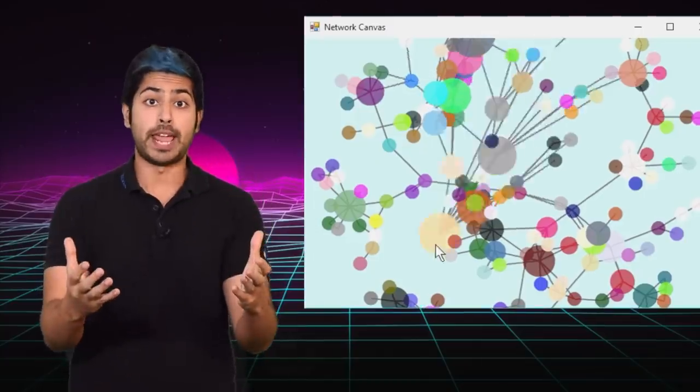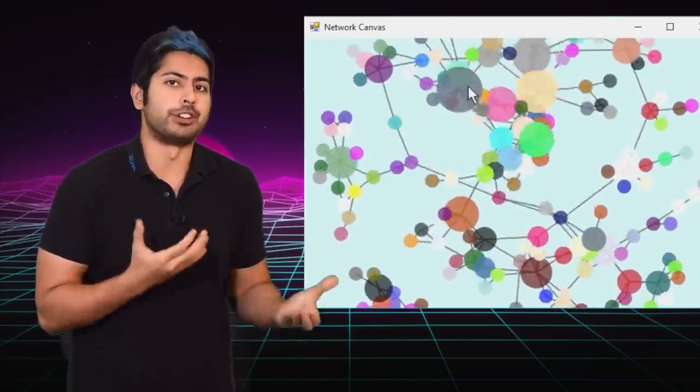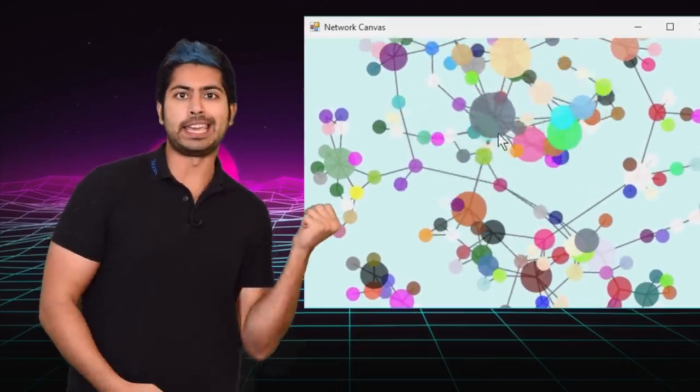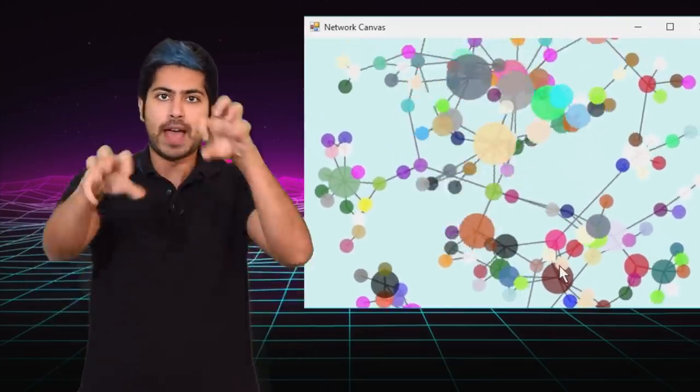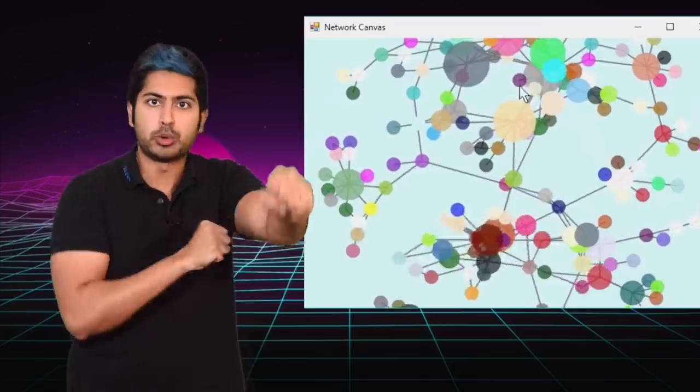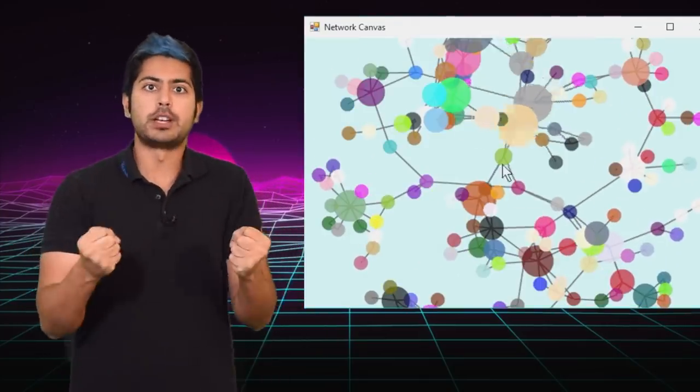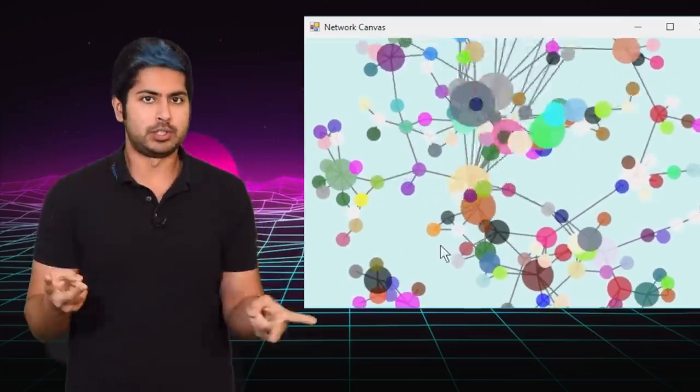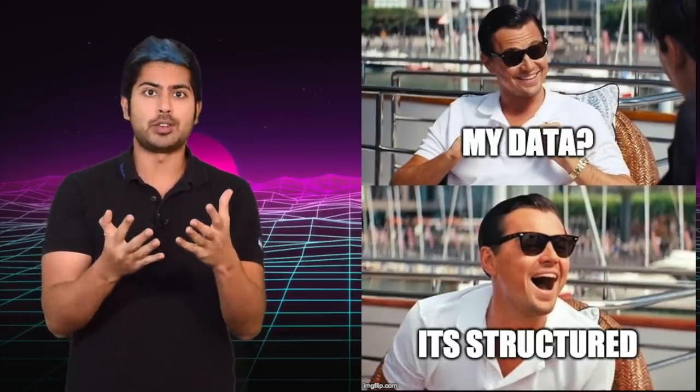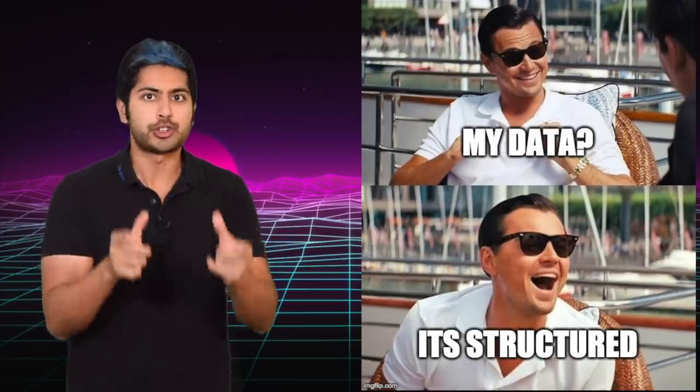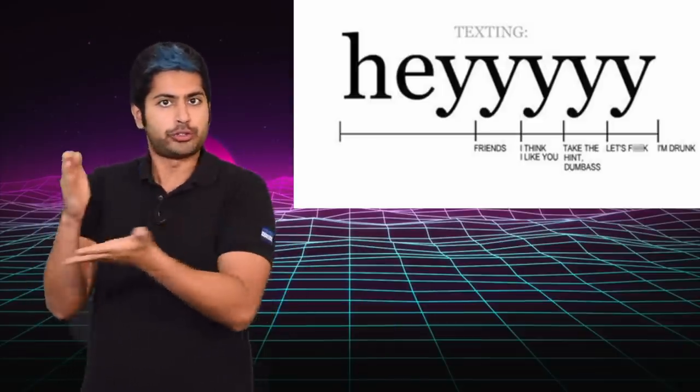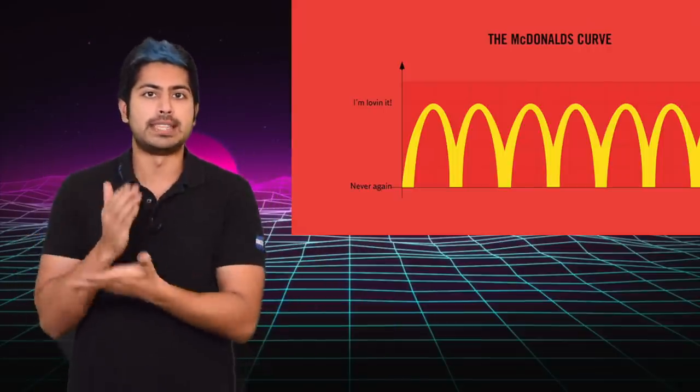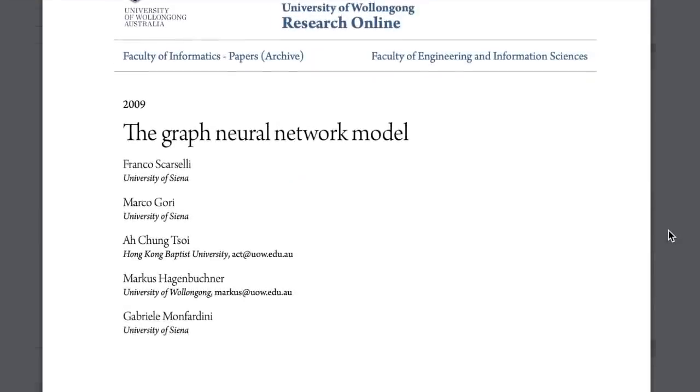And another problem we have is that graphs have an arbitrary structure. They don't really have a beginning or an end. They're a bunch of values without a specific location in space. Two vertices that are connected to each other by an edge aren't necessarily close to each other. Traditional neural nets only really work well with structured data, like sequential text data, time series data, even image data, since images have structure embedded in them via pixel proximity. To solve these issues, a paper from 2009 out of the University of Wollongong, Australia, proposed a graph neural network model, or GNN.